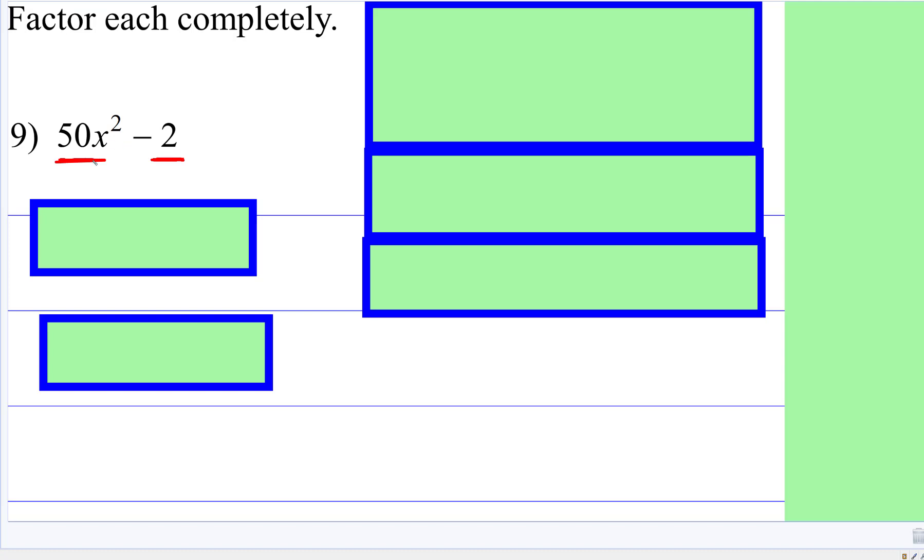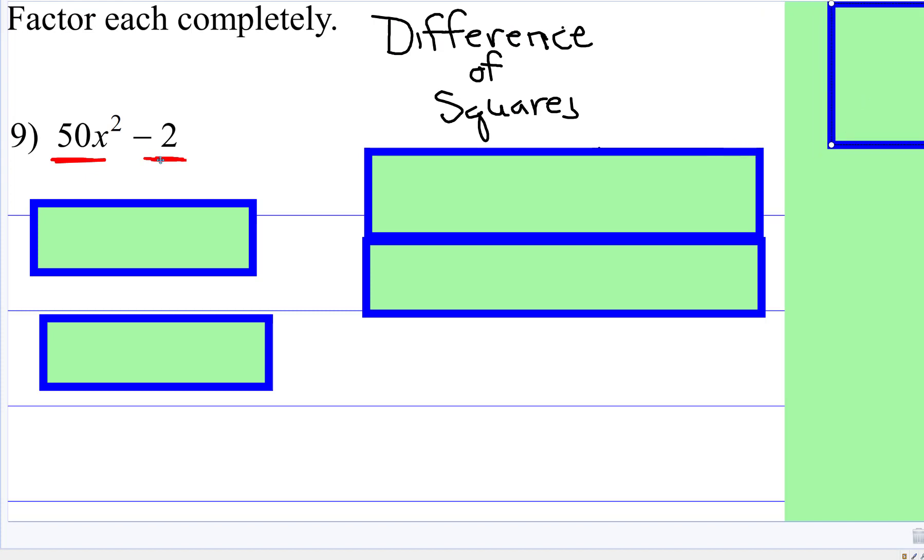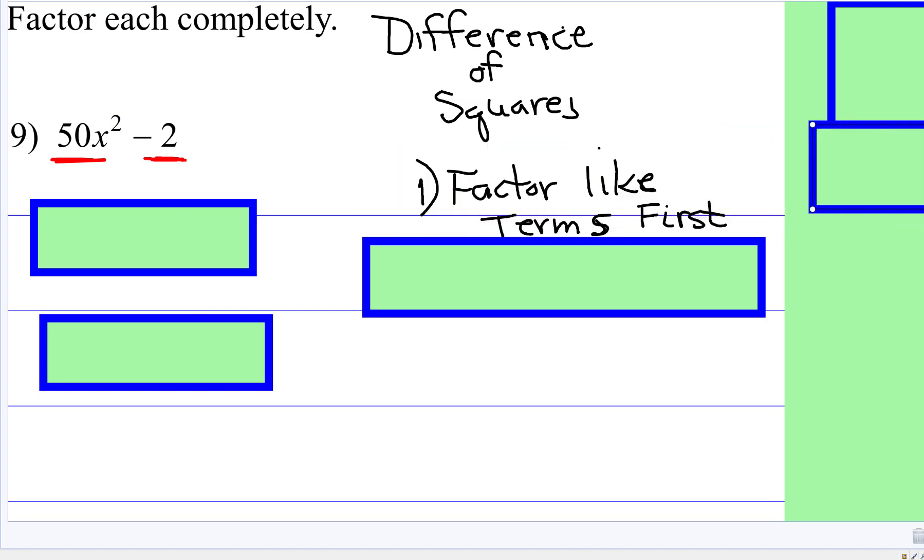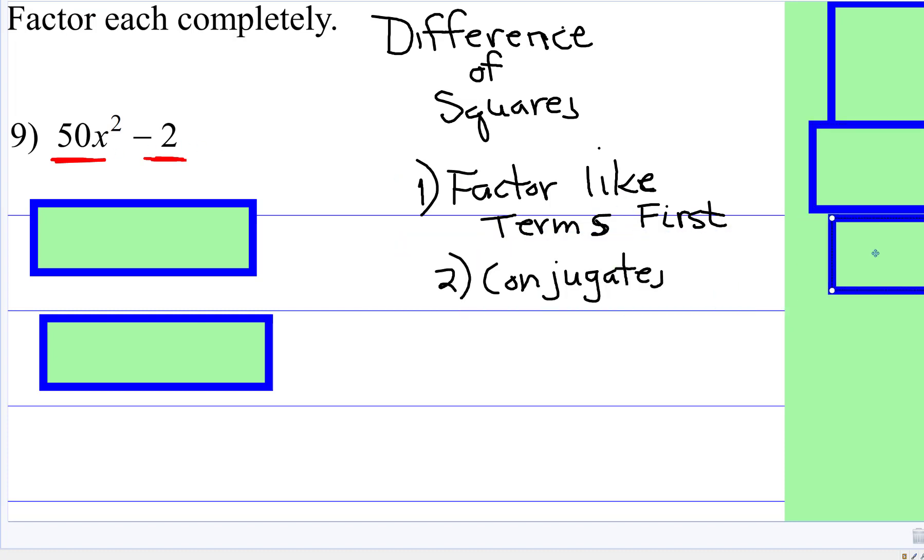So what you are going to need to do first is, do these two things have something in common? And if they do, if there are two terms and there is a subtract sign, it might be a hidden difference of squares. You have to factor like terms first, factor out what they have in common, and then go ahead and write the conjugates.